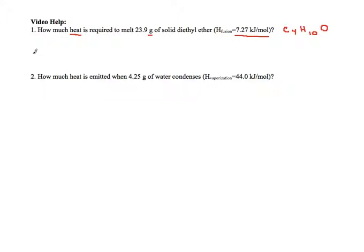You just start with your given, and so your given in this problem is your 23.9 grams. And now I'm going to need to get into kilojoules eventually. Now, the only way to get into kilojoules is first to get into moles so that I can use this conversion factor. So, as always, I'm going to put my units first, and then I'm going to put my numbers. And so I'm going to put grams on bottom here. I'm going to put moles up top. So now I'm in moles. Now I can get into kilojoules. So I'm going to put moles on bottom.